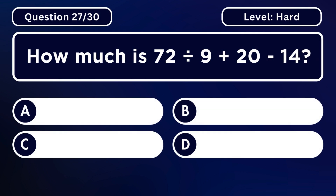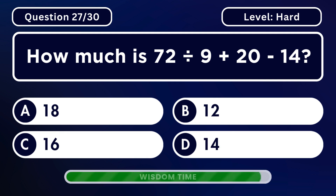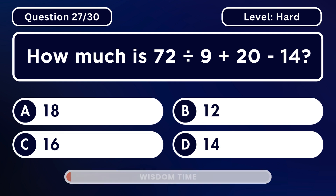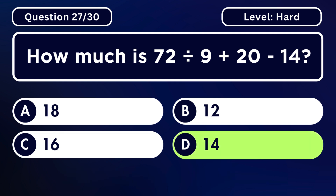How much is 72 divided by 9 plus 20 minus 14? Answer D. 14.